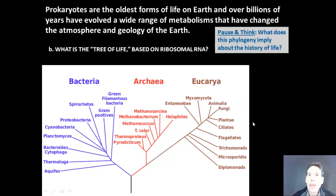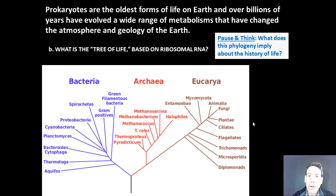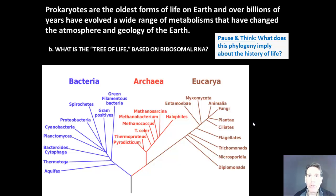Consider this question: what does this phylogeny imply about the history of life? As an analogy, imagine an old tree growing in your backyard — maybe 200 years old. The very upper part of that tree has small twigs with leaves, and those twigs are what grew most recently. In the same way, animals, fungi, and plants are like the small twigs of this tree of life, while the major limbs represent ancient bacteria and archaea — some of the oldest forms of life on Earth.